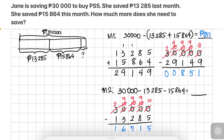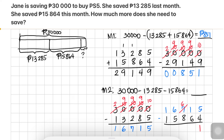Then we subtract 16,715 minus 15,864. 5 minus 4 is 1. 1 ten minus 6 tens is not enough, so regroup from hundreds: 7 hundreds becomes 6 hundreds, giving 10 tens plus 1 ten equals 11 tens. 11 tens minus 6 tens is 5.